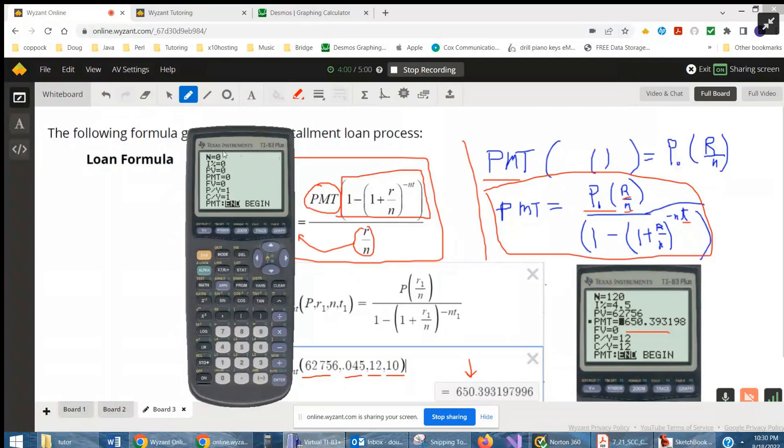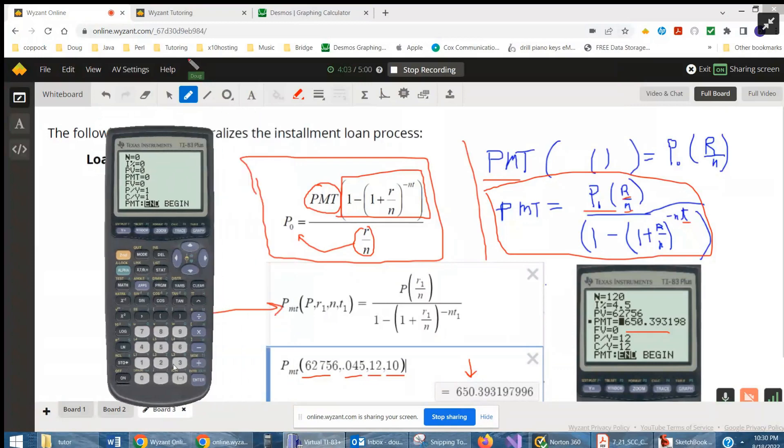And that n is the number of payments that you're going to make, so there's 12 payments per year times 10 years. That's the number of payments she's going to make. The interest rate on the TVM solver, you don't use it as a decimal, it's already assumed to be a percentage, so you say 4.5%. The present value is the loan amount you're paying off, $62,756.